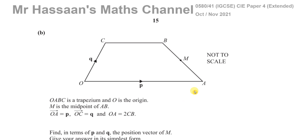Welcome back to Mr Hassan's Maths channel. This is another question from the October/November 2021 0580 syllabus paper 4 variant 1 from the IGCSE Cambridge examining board. This question is about vectors — question 7 part b. Other questions on the paper, including part a, can be found by clicking the link at the end of the video, which takes you to the playlist.